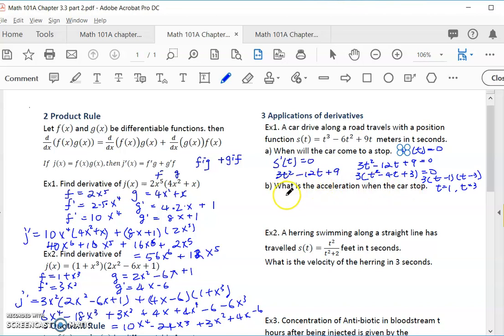What is the acceleration when the car stops? We know that acceleration is the derivative of the velocity function, how the velocity changes. So we do double prime of t. From this f prime, 3t squared, it will be 6t minus 12. So what is the acceleration when the car stops? When the car stops is at t equal to 1. The acceleration s double prime of 1 would be equal to 6 minus 12, equal to negative 6 meters per second squared. And then at t equal to 3, you plug in s double prime of 3, that would be 6 times 3 minus 12. That is 6 meters per second squared.